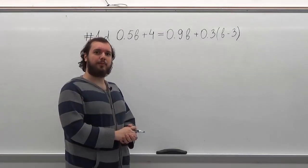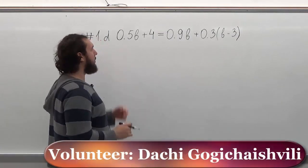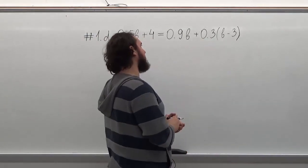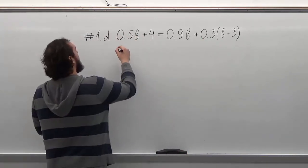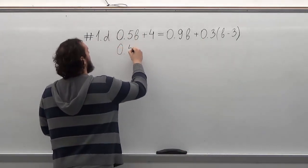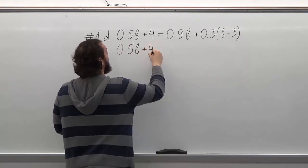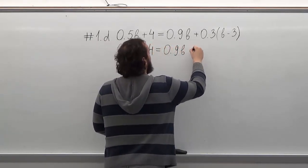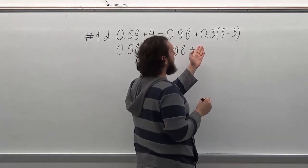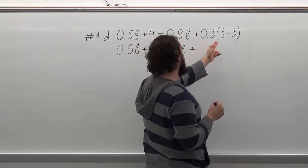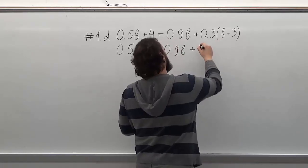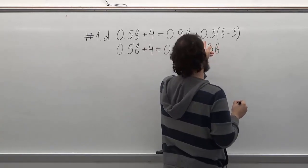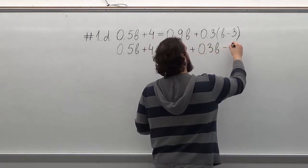Hello, welcome to Help Your Math. Today we're going to be solving this problem for B. The first step should be opening up the parentheses on this side. So we multiply B by 0.3, which is going to be 0.3B, and then we multiply minus 3 by 0.3, which is going to be minus 0.9.